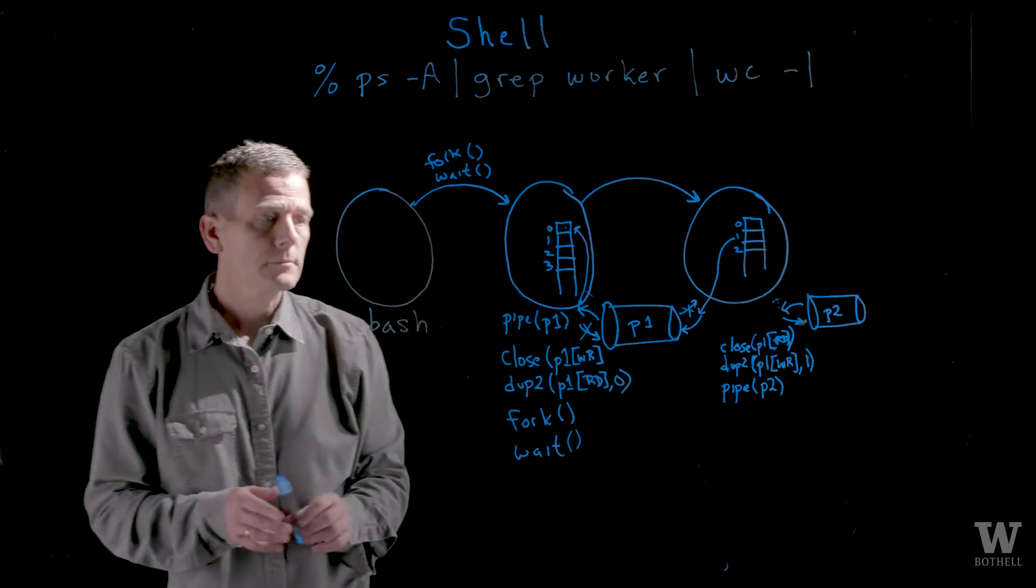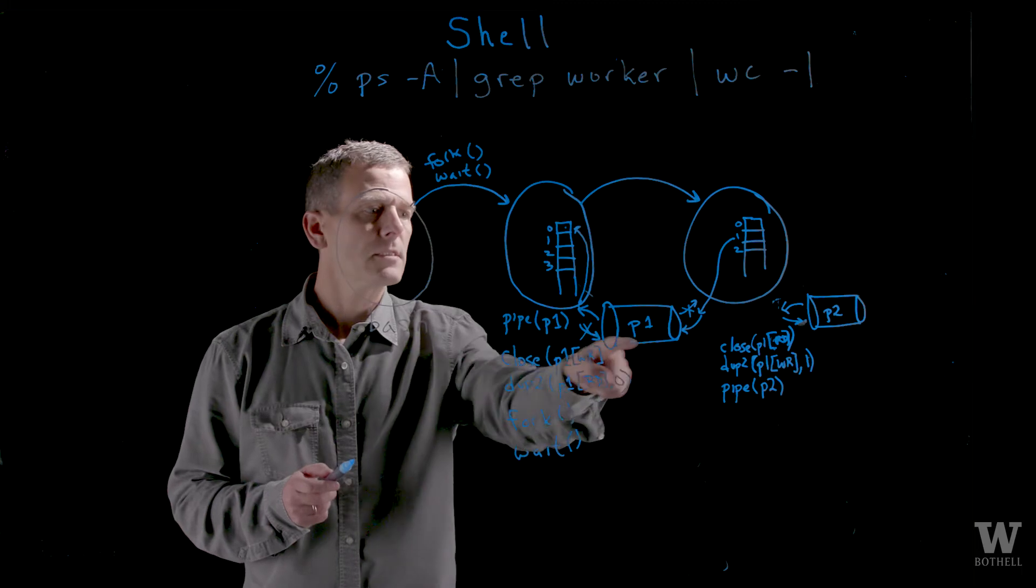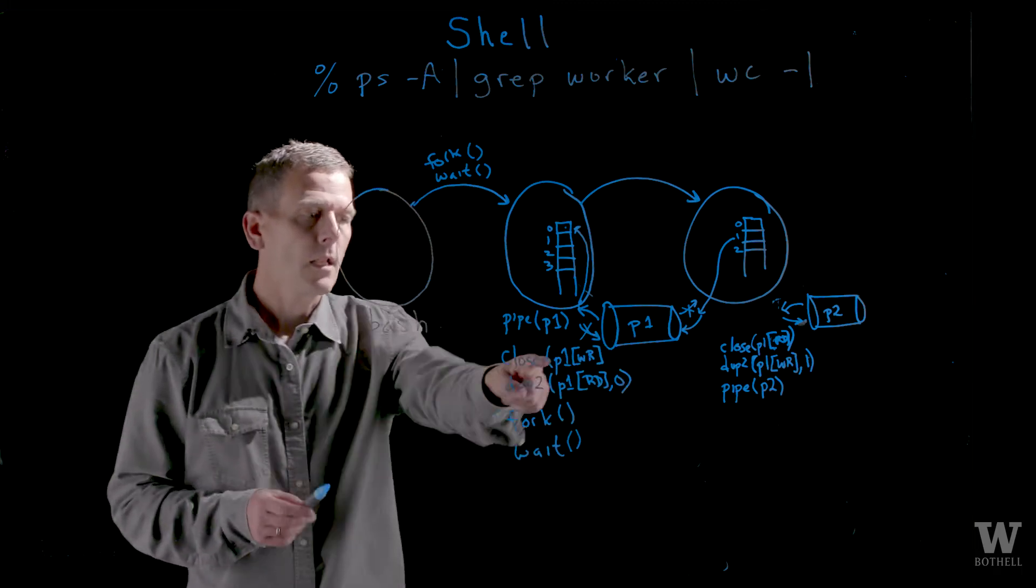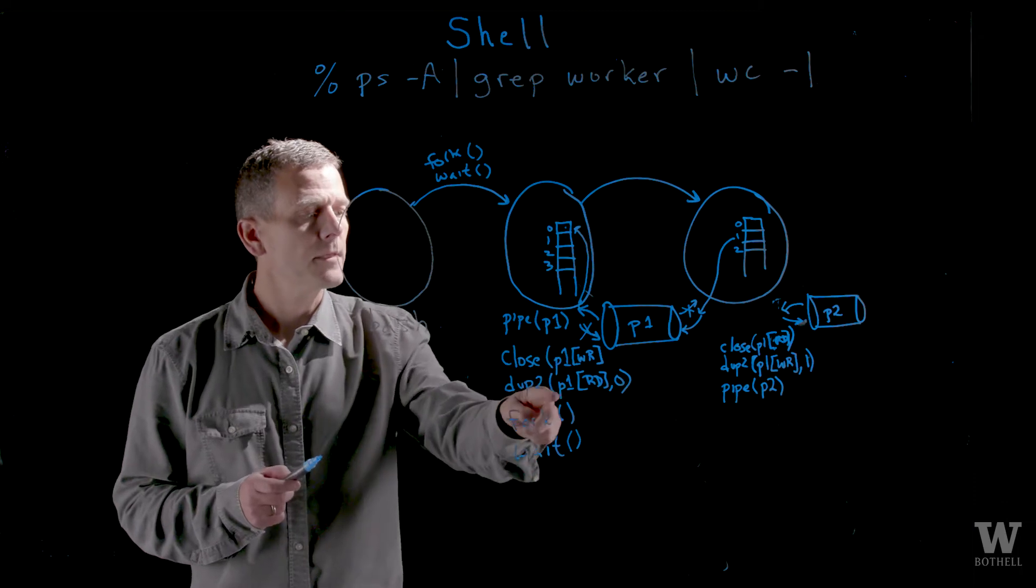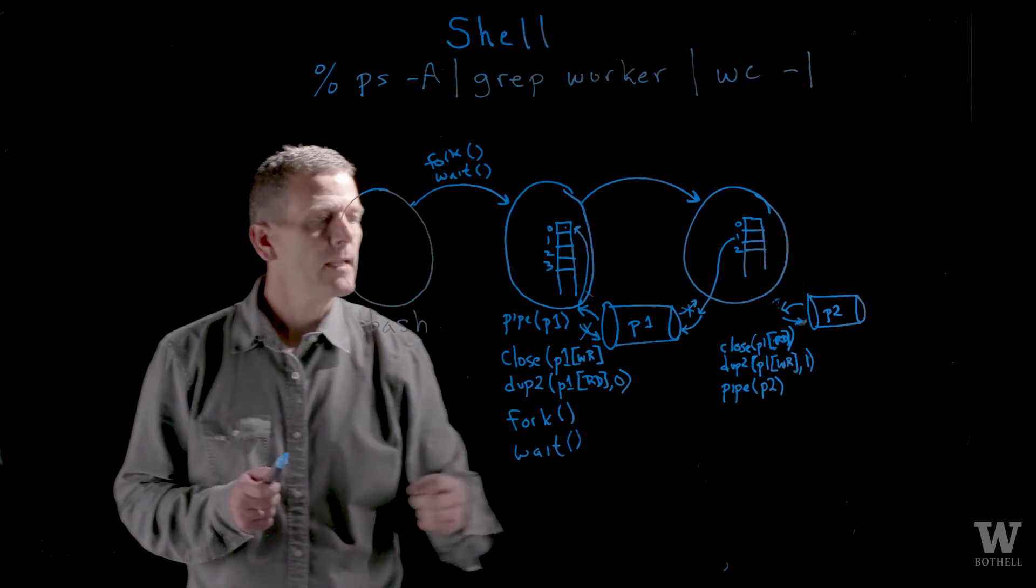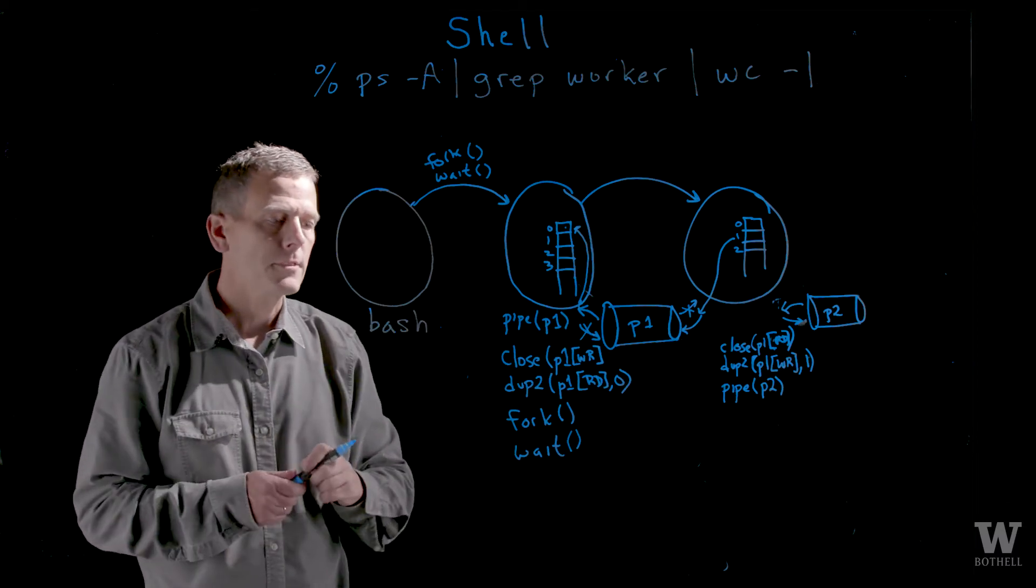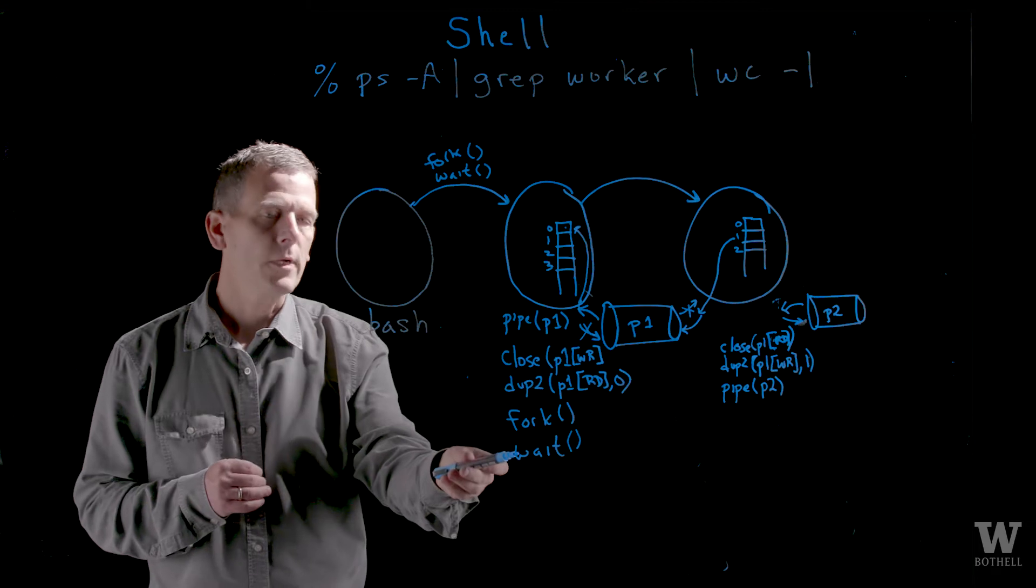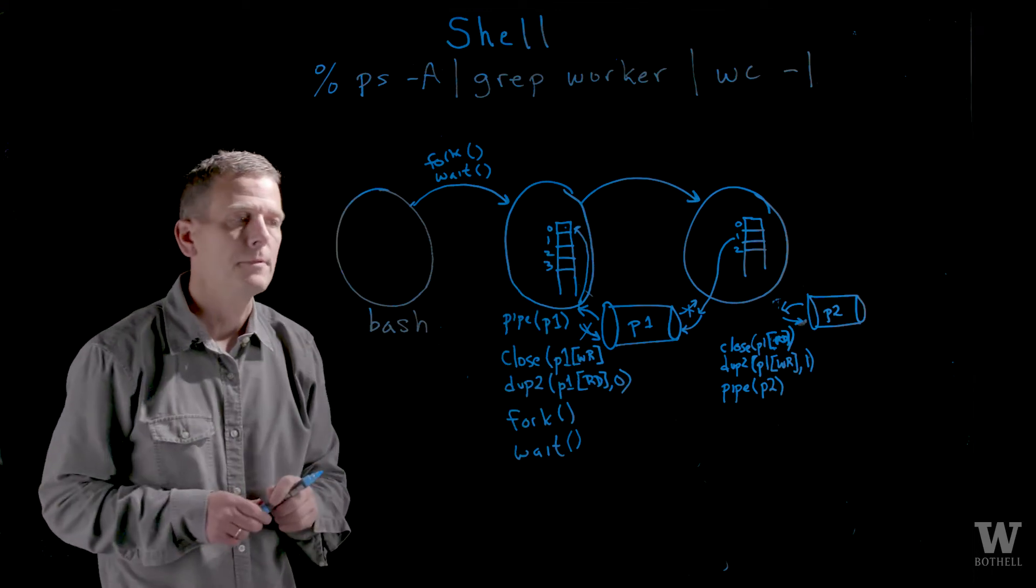It forks and waits. In the child of the bash, I create a pipe. In this case, I'm calling it p1. I close the right side of the pipe, and then I dupe the read side of the pipe over to the standard in for that process. Now, anything I write into the pipe will go into the standard in for that process. And then I fork and I wait, because I'm waiting for another process to put something in the pipe so I can run.